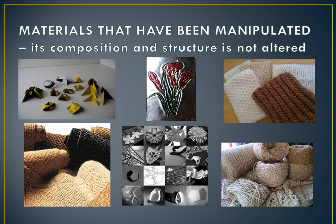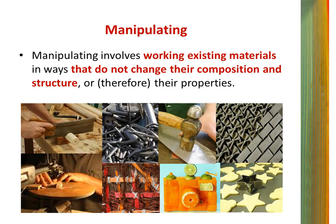The third of these is manipulation. Here we have an example of how materials have been manipulated. Its composition and structure is not altered. Manipulation involves working existing materials in ways that do not change their composition and structure and therefore their properties. Manipulation can involve, for example, laminating materials, changing the shape of materials and joining different materials together. It can involve cutting, moulding, bending, joining, gluing and painting — these are examples of manipulative operations.